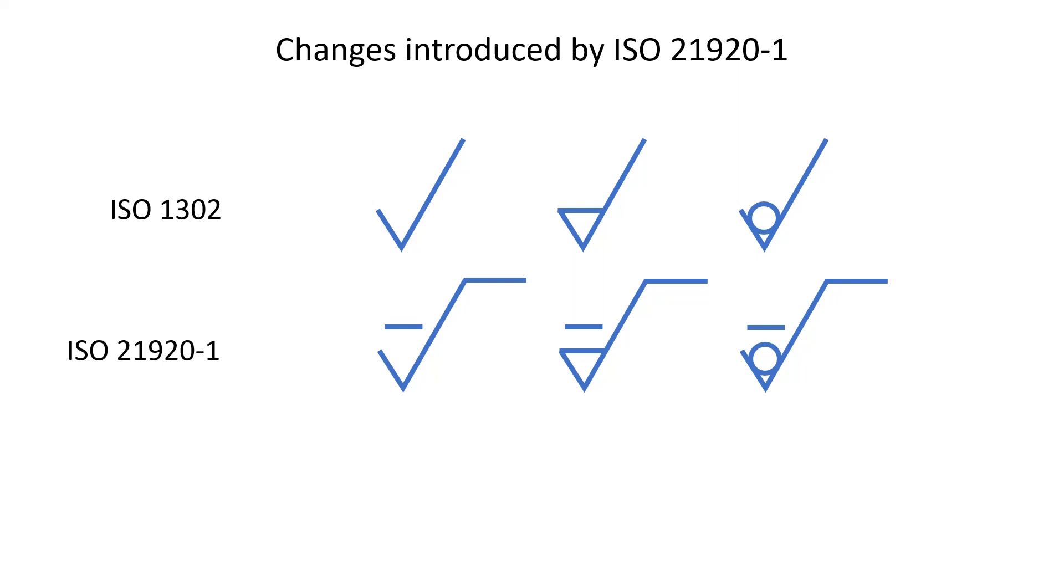A specification with the new dash means that the reference standard is ISO 21920-1 and not ISO 1302. Therefore, the associated parameters are defined in ISO 21920-2 and not in ISO 4287 or ISO 13565. This dash also allows users to distinguish surface texture specifications between profiles and surfaces, as ISO 25178-1 defines a different sign for aerial specifications.